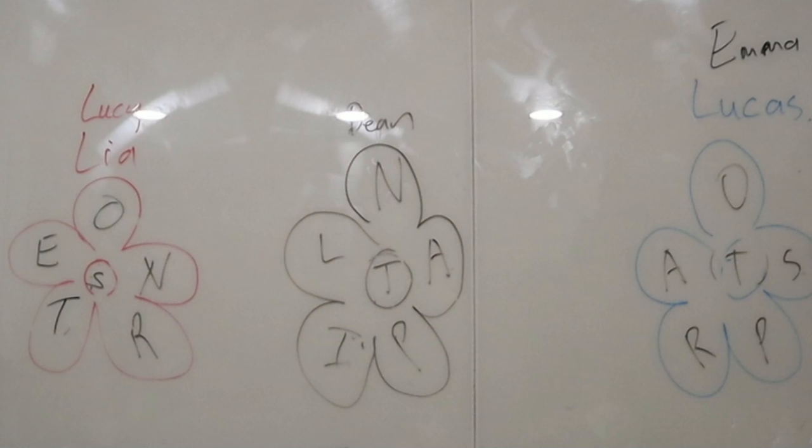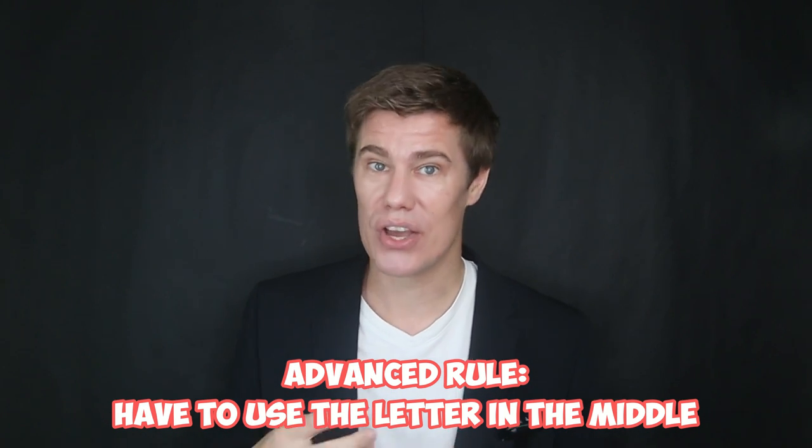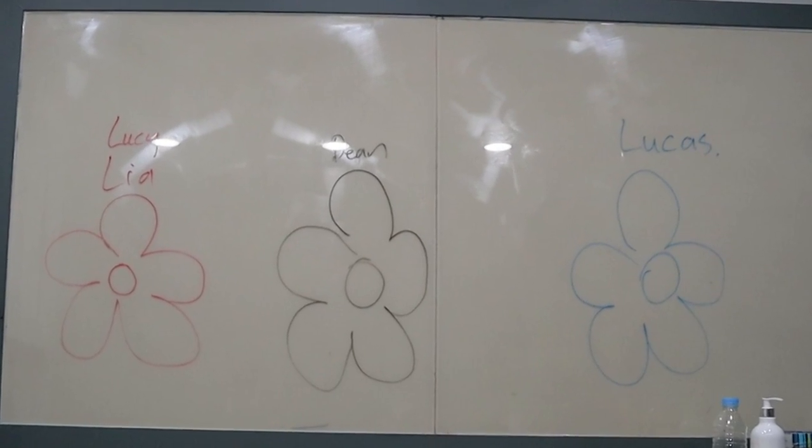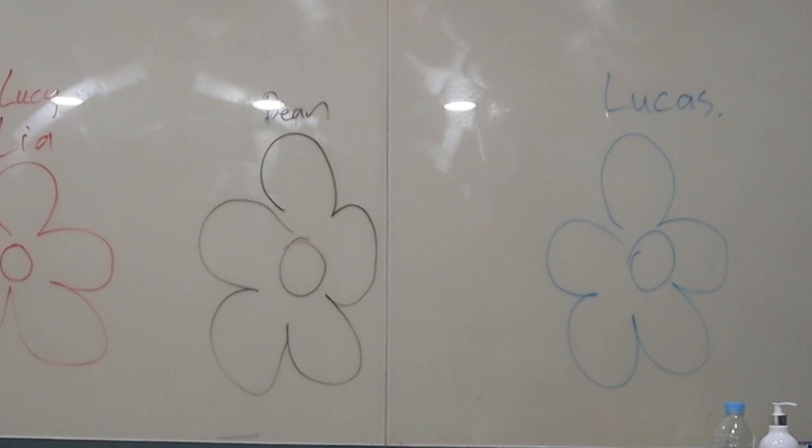Place the students in groups. For each group, draw a flower on the board. Place letters in each flower and in the petals. Students then get one minute to write down as many words as they can using those letters. After a minute they stop and count up how many points they have for that flower.